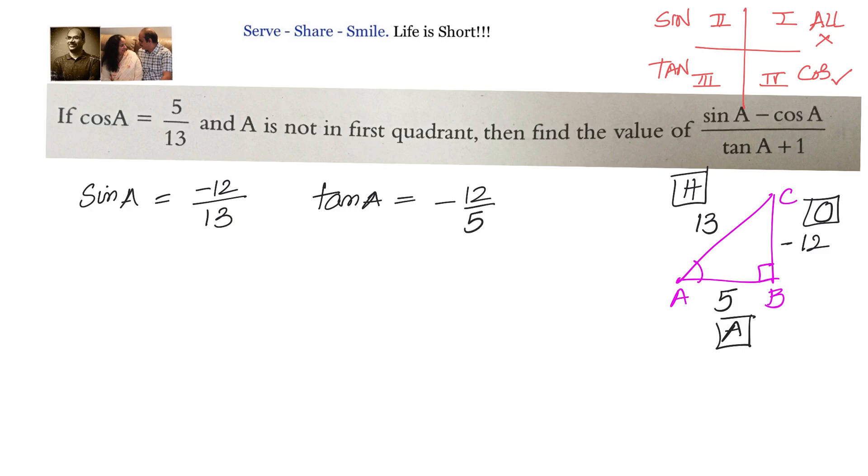Once we understood this we can directly go ahead and substitute. What we need to find out is sin A minus cos A divided by tan A plus 1. What is sin A according to us that is minus 12 by 13 minus cos A that is minus 5 by 13 divided by tan A plus 1, minus 12 by 5 plus 1.